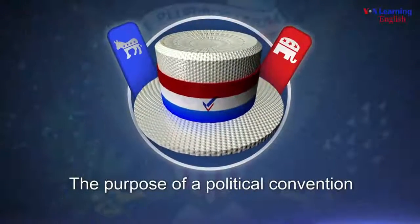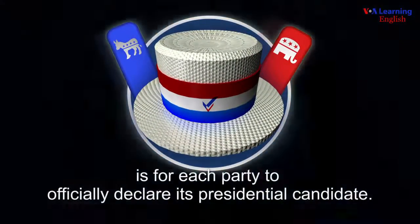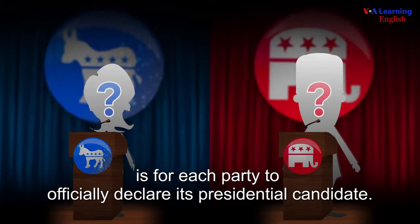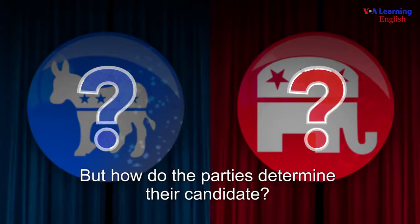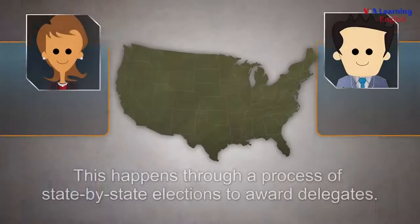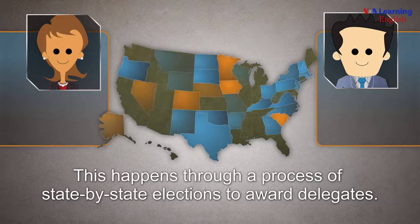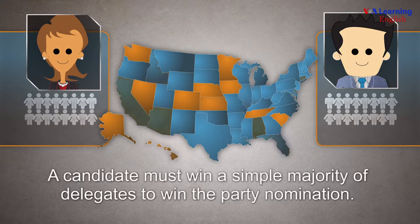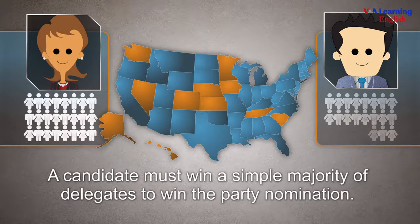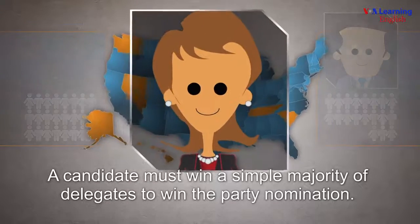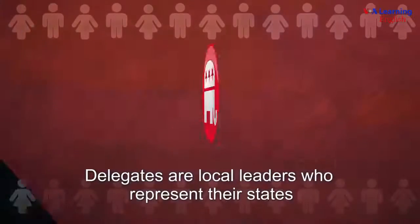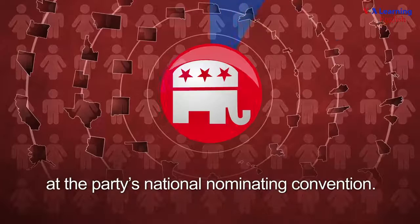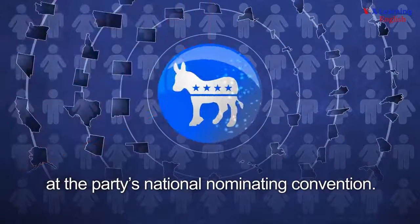The purpose of a political convention is for each party to officially declare its presidential candidate. But how do the parties determine their candidate? This happens through a process of state-by-state elections to award delegates. A candidate must win a simple majority of delegates to win the party nomination. Delegates are local leaders who represent their states at the party's national nominating convention.